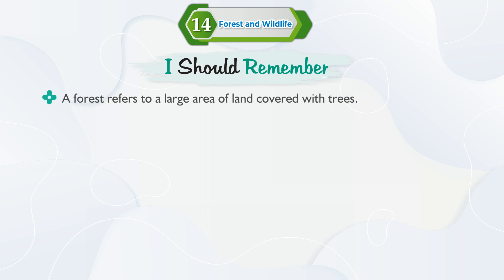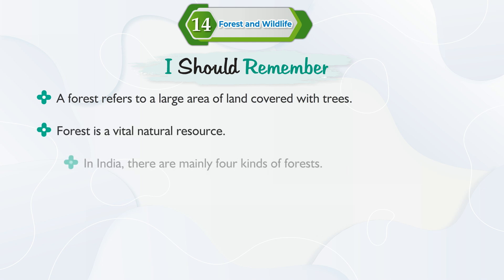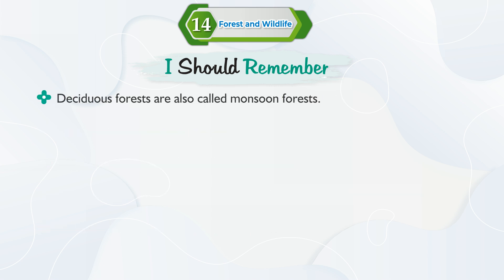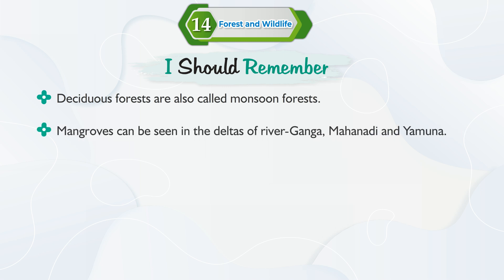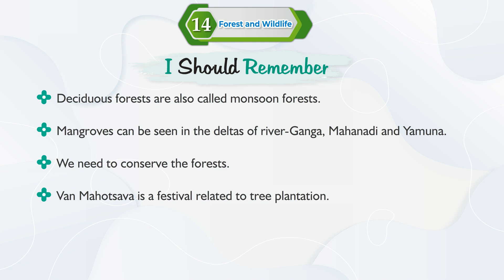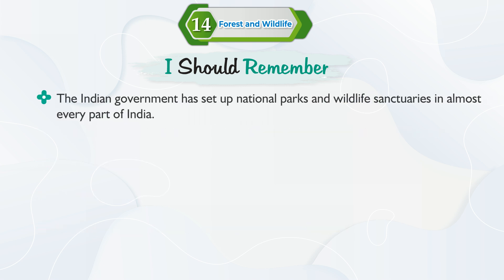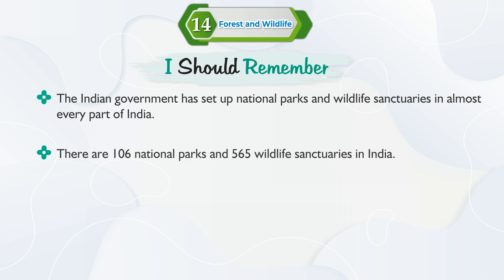Points to remember: A forest refers to a large area of land covered with trees. Forest is a vital natural resource. In India, there are mainly four kinds of forests: evergreen forests (also called tropical evergreen forests), mountain forests (also called coniferous forests), deciduous forests (also called monsoon forests), and mangrove forests. Mangroves can be seen in the deltas of rivers Ganga, Mahanadi, and Yamuna. We need to conserve the forest. Van Mahotsav is a festival related to tree plantation. The Chipko movement was started by Sundarlal Bahuguna. The Indian government has set up 106 national parks and 565 wildlife sanctuaries across India.